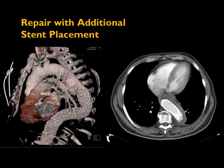For treatment of a type 1 endoleak, the patient went and got an additional stent. You want to make a good seal, so you put another stent in. In this patient, they placed another stent over the previous one, extending the landing zone a little bit distally to get better purchase on the aortic wall, and they were able to make the type 1 endoleak go away.